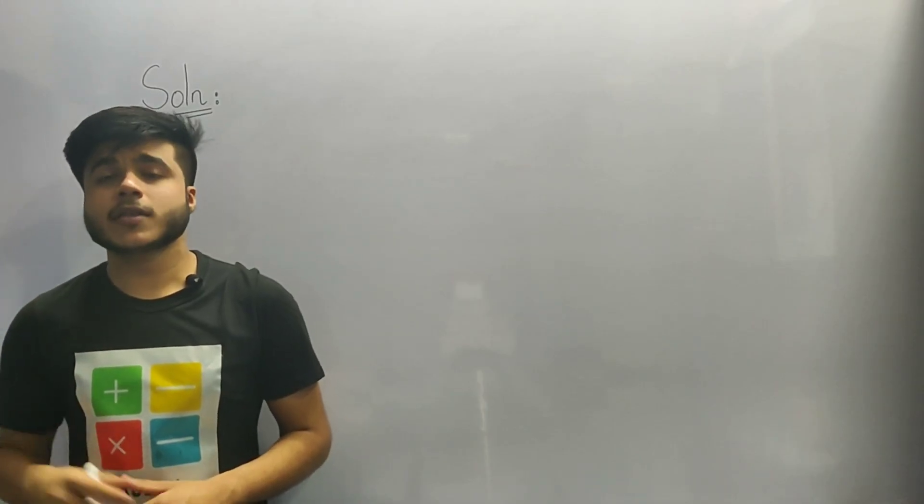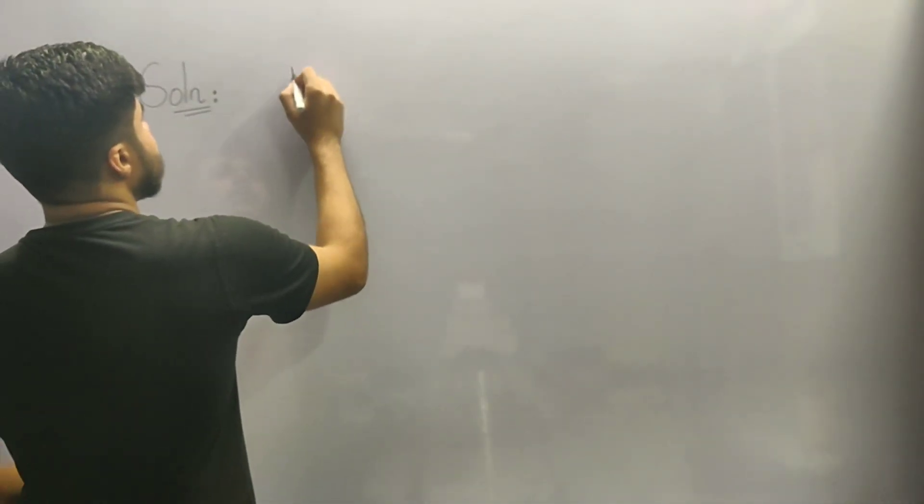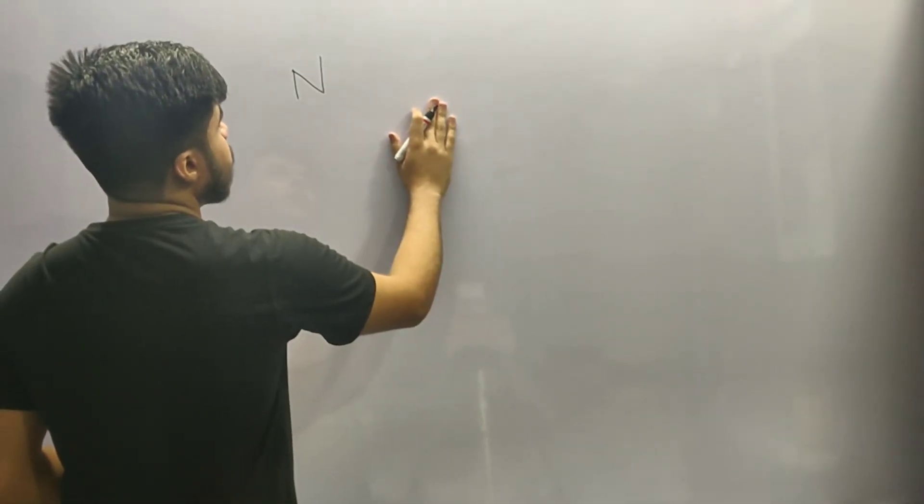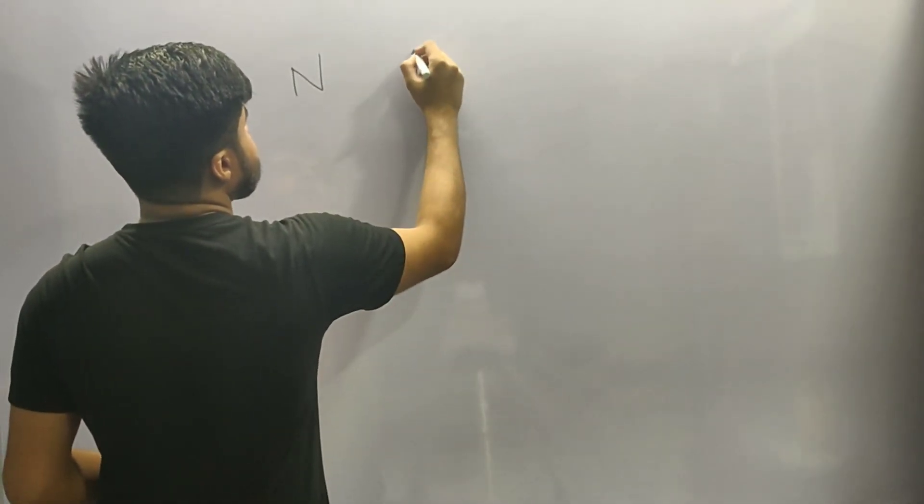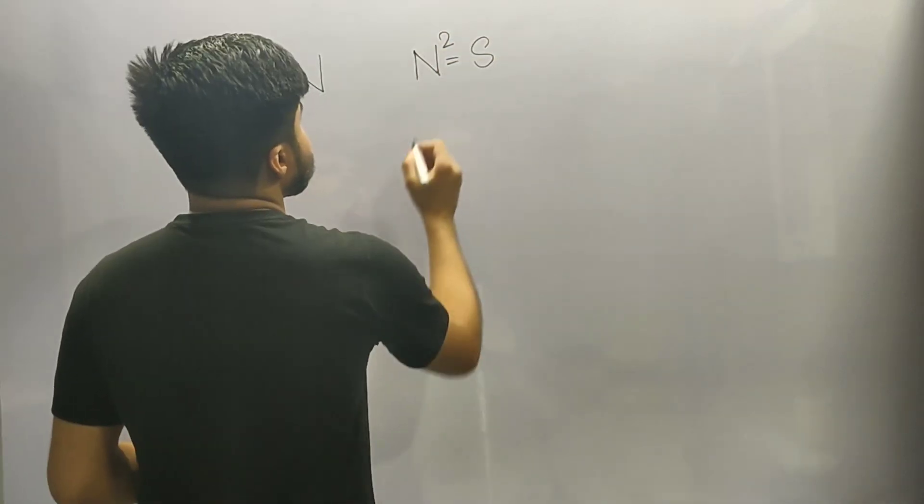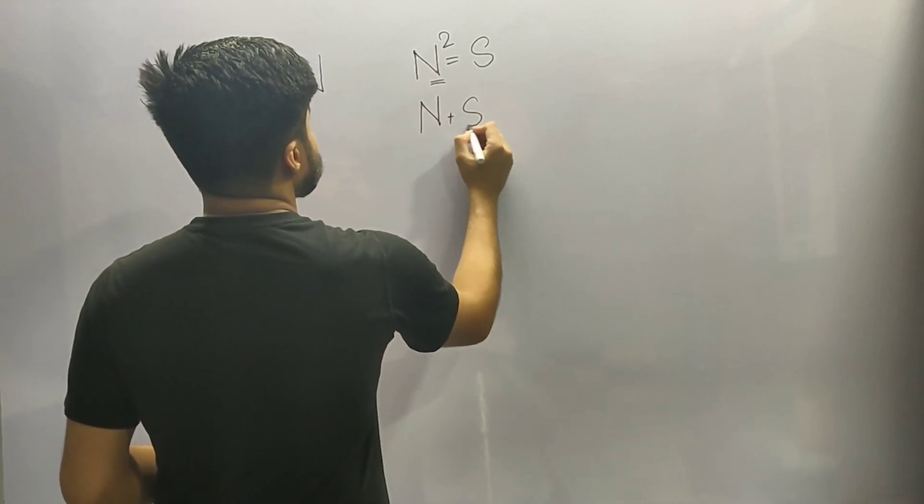Let us first write down the points that we were given. We were given that we have a number n and the number is squared to give a value of s. So I can say that n square is equal to s, and we have to find at what value of n the value of n plus s would be minimum.